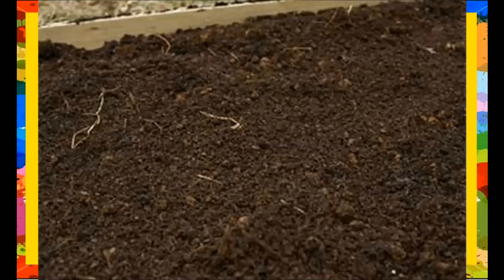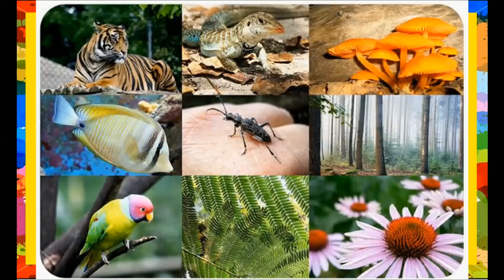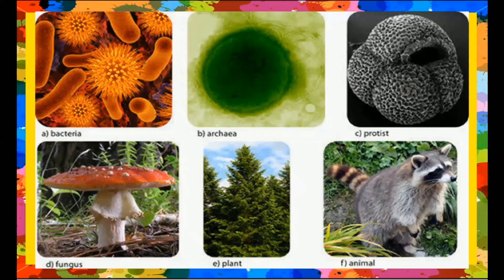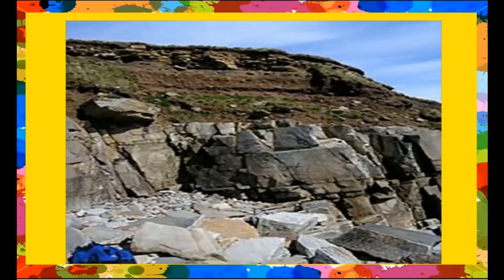Soil is a system into which energy and matter from the sun, the atmosphere, and living organisms penetrate and interact. It is a system because it is composed of many different parts, and each of the layers has a special function to perform.